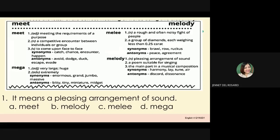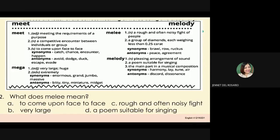Number 2: What does Milly mean? A. To come upon face to face. B. Very large. C. Rough and often noisy fight. D. A poem suitable for singing. Again, what does Milly mean? A. To come upon face to face. B. Very large. C. Rough and often noisy fight. Or D. A poem suitable for singing.